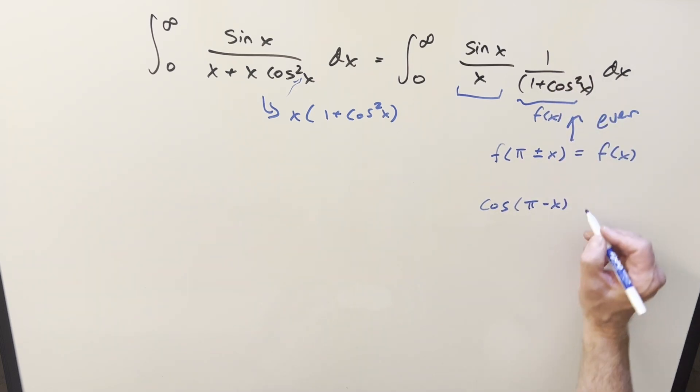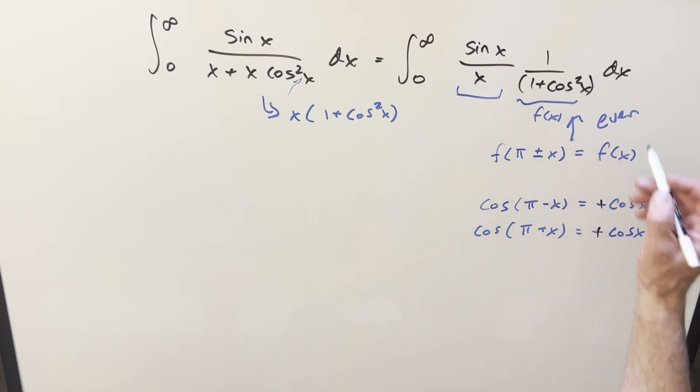So if I look at cosine pi minus x, this is going to be the same thing as minus cosine x. And if we look at cosine pi plus x, this is also going to be minus cosine x. But when we square it, the minus sign is going to go away and we're just going to get back cosine squared x. And so we're going to end up with our f of x and this check is going to work.